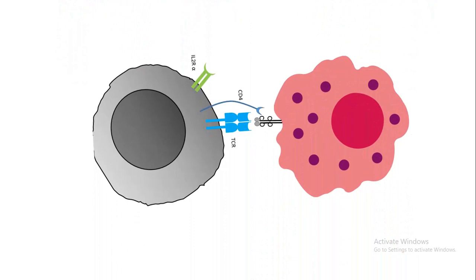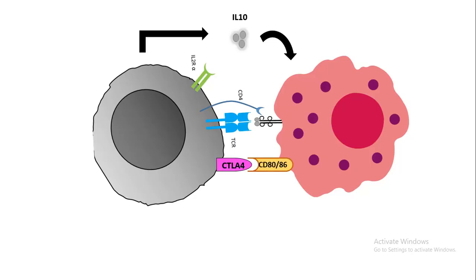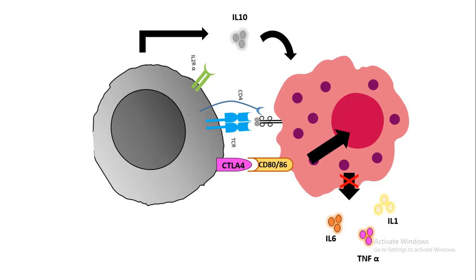T regulatory cells suppress macrophages and other antigen-presenting cells through multiple mechanisms. First, they secrete IL-10, which directly acts on macrophages or other antigen-presenting cells. They also have an inhibitory receptor known as CTLA-4, which interacts with CD80 or CD86 and ultimately signals to the nucleus to prevent the expression of several pro-inflammatory cytokines, thereby reducing the inflammatory response.